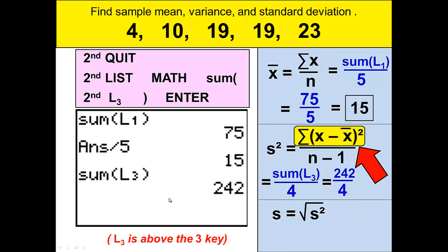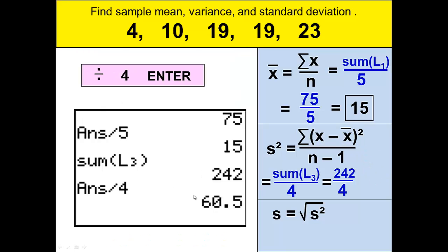Remember that we're not getting this number by itself. We are plugging it back into the formula. And so when we take 242 and divide it by 4 and press enter we get 60.5. And that is the sample variance.